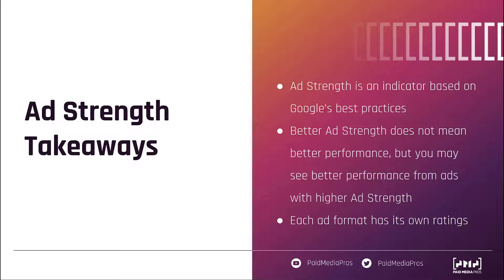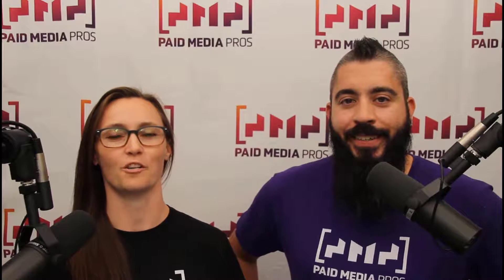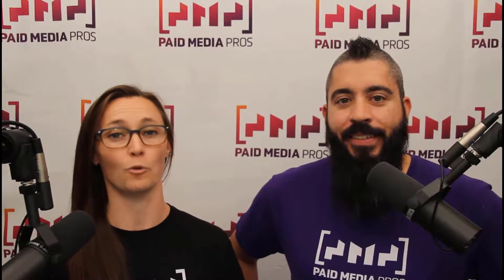Hopefully that demystifies ad strength a little bit. I would categorize ad strength in the same group as optimization score and quality score — they're meant to be indicators based on best practices, but they're not guarantees of better performance. If you have any additional questions about ad strength or any other metrics in the Google Ads interface, let us know in the comments. Thanks for watching. If you liked it, give us a thumbs up, consider subscribing to the Paid Media Pros YouTube channel, and you can also support the channel through our merch shelf or the super thanks button.